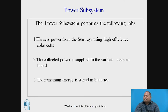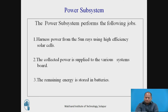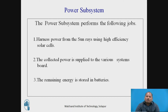Now let us go to the power subsystem. The power subsystem mainly does the following jobs: first, it harnesses power from the sun's rays using high efficiency solar cells; second, the collected power is supplied to the various systems on board; and third, the remaining energy is stored in batteries.